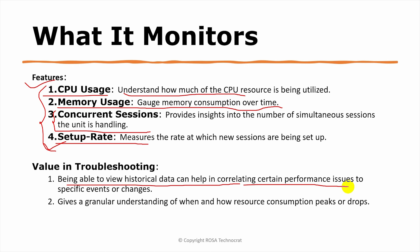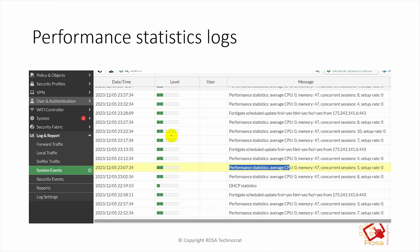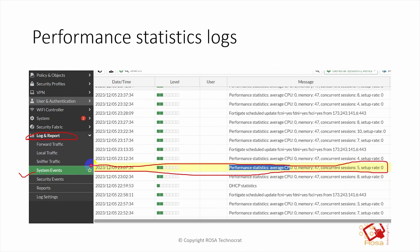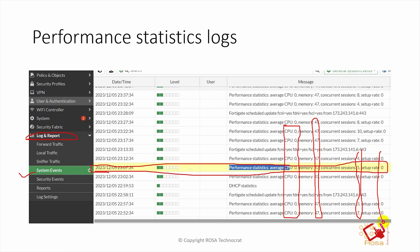If there is no SNMP server or manager and no historical data being collected, this log helps in such cases. If you go on to a FortiGate firewall and browse through the system events under Log and Report, you will see these kinds of logs under your system event logs. These logs are generated at regular intervals — as you can see here, performance statistics entries keep appearing. My device is not in production so the CPU is always zero, but this also helps establish a trend of CPU and memory. The concurrent session count and setup rate are also visible in the logs.